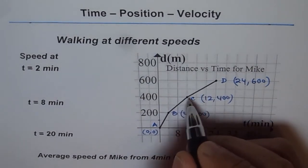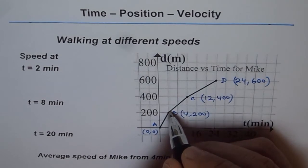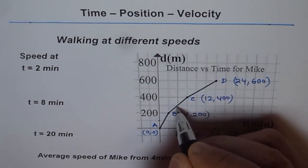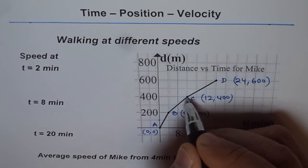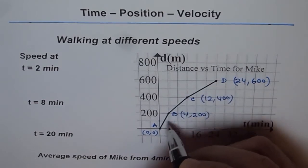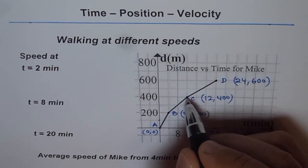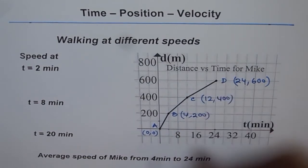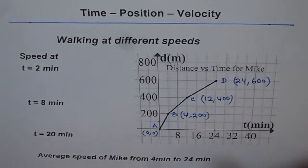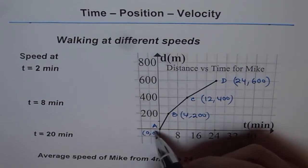Looking at the legs AB, BC, and CD, they have different slopes. AB is much steeper than BC, and BC is steeper than CD. So the slope of AB is much higher than the slope of CD. The slope in a distance-time graph is the same as velocity or speed.